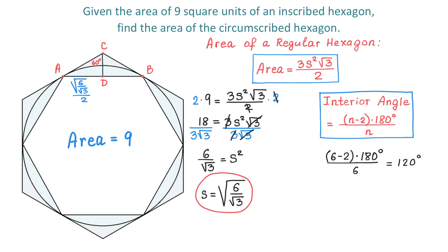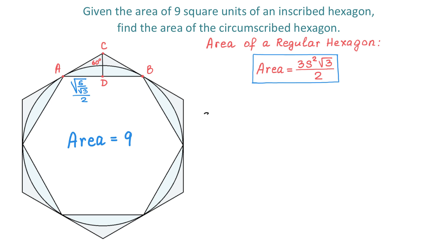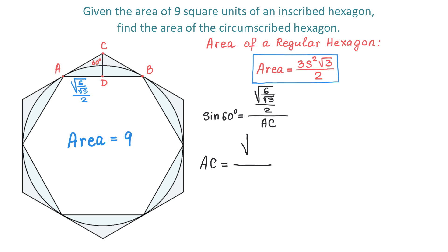In this right triangle, AC represents the hypotenuse. Since we know one angle and the opposite side, we can use the sine function: sine of 60 degrees equals the opposite side, which is square root of 6 over square root of 3 divided by 2, all divided by hypotenuse AC. Solving for AC by dividing by sine of 60 degrees, and since sine of 60 degrees is square root of 3 over 2, the 2s cancel, giving AC equals square root of 6 over square root of 3, all over square root of 3.